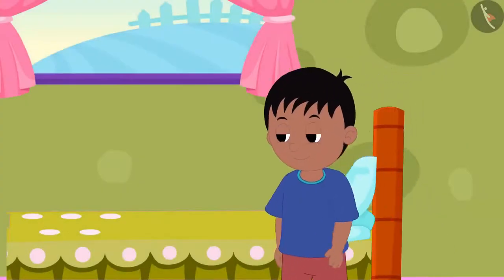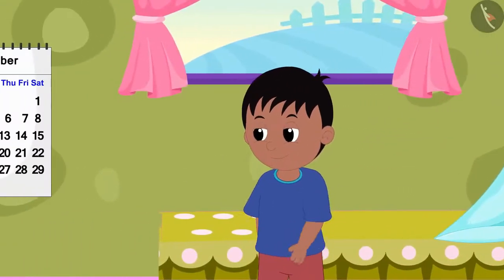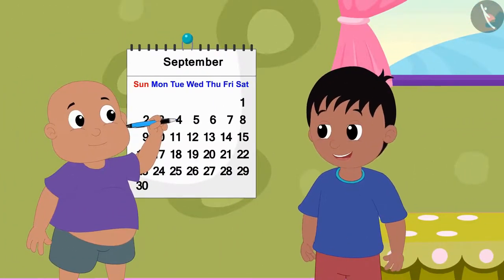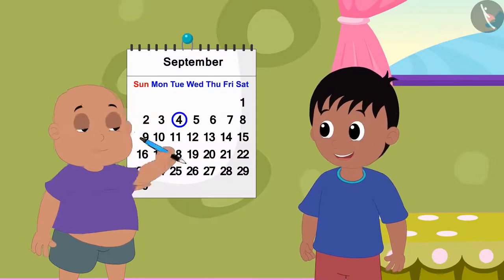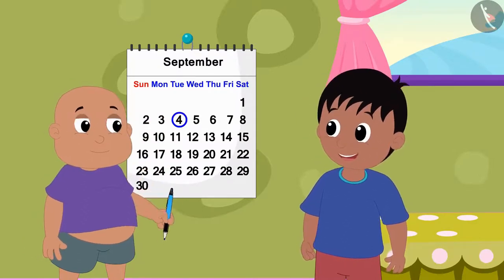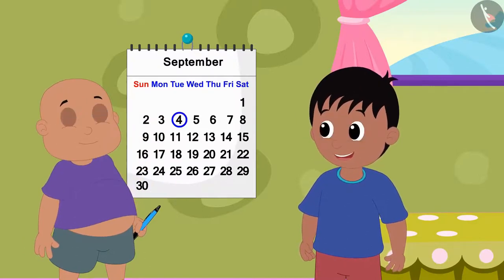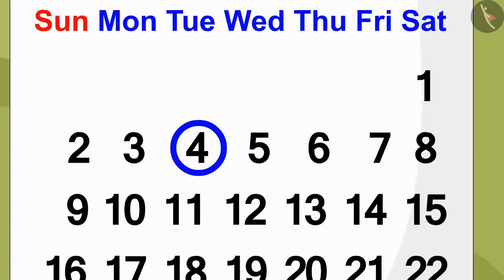Raju has come to Bablu's house. When he reached Bablu's house, he saw that Bablu was drawing circles on some dates on his home calendar.